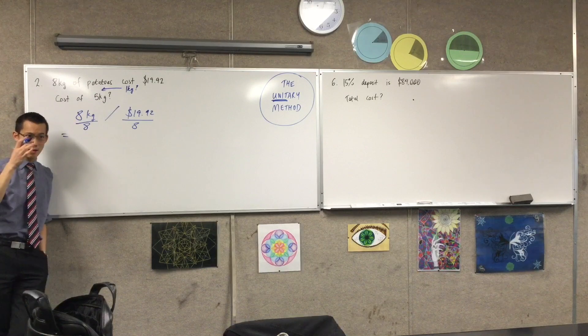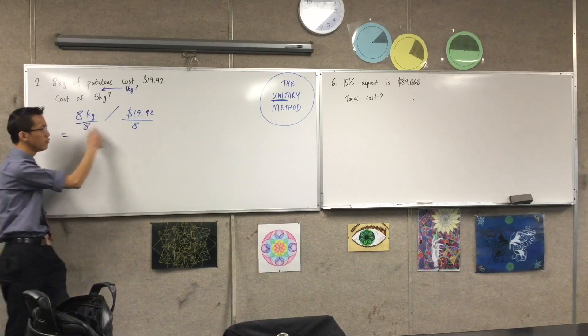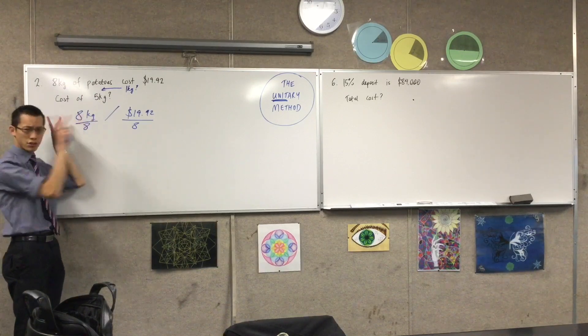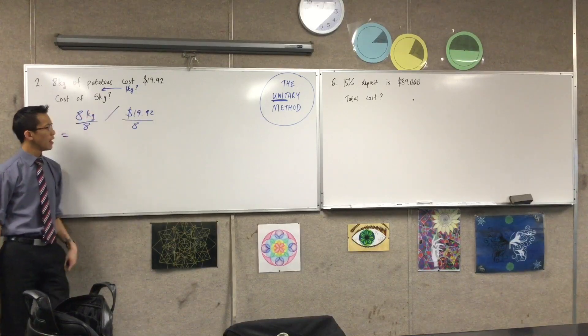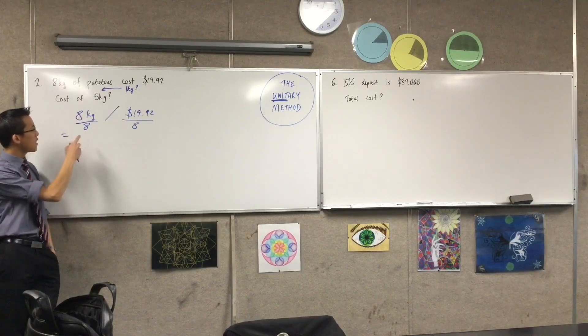including dividing the top, which is this first number, and the bottom, which is the second number. Divide them both by eight. So when you have a go at this, you can see you're going to get one kilo over here on the left,